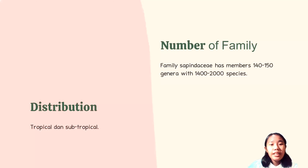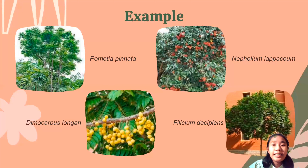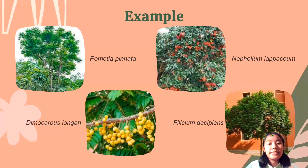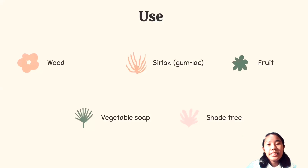The distribution of this family is in tropical and subtropical areas. The Sapindaceae family has members of 140 to 180 genera with 1,400 to 2,000 species. Examples of this family are Dodonaea pinnata, Nephelium lappaceum, Dimocarpus longan, and Filicium decipiens. The uses of this family are for wood, shellac or gamlac, fruit, vegetable soap, and shade tree.